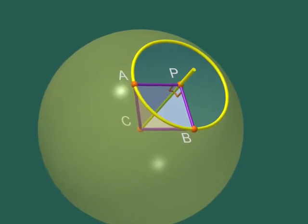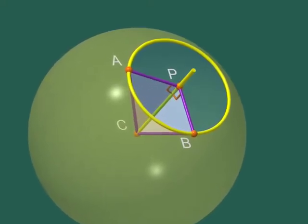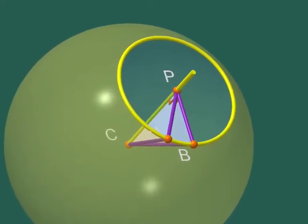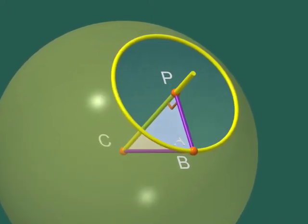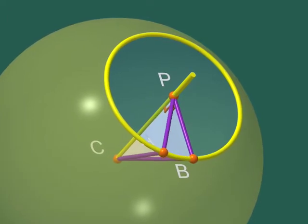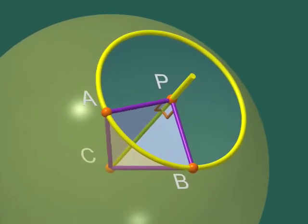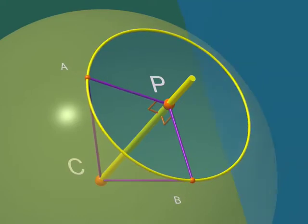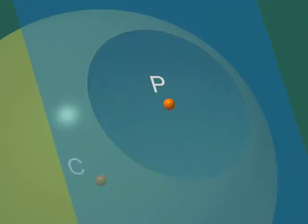Therefore, we have proved that all points which are both on the sphere and the plane belong to some circle. Does that imply that all points on this circle are on the sphere and on the plane? A priori, no. We still have to prove it.